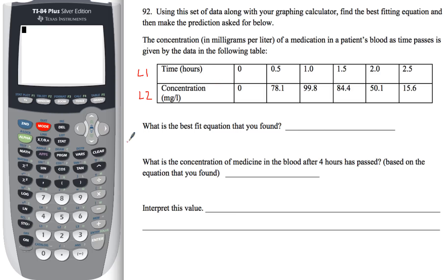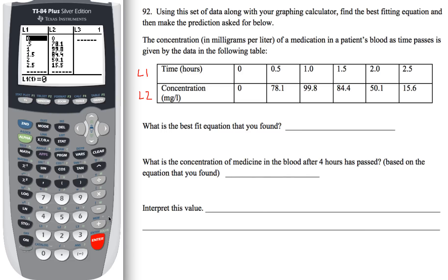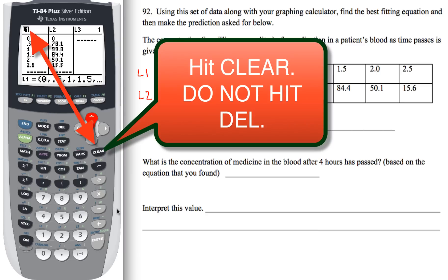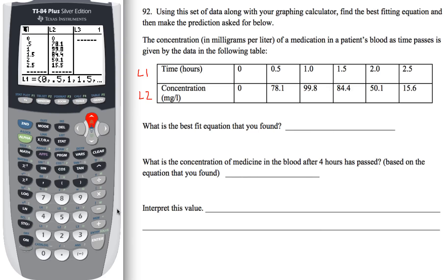To get to those lists, what we're going to do is hit our stat button, and then we're going to choose number one, edit. I've already put that information in there, but if you have anything typed in there, what you need to do is go up to the top of the row, and you're going to need to hit the clear button. Make sure you hit the clear button to remove any data that might be in there. Do not hit the delete button, because then that will just get rid of L1 altogether. Go ahead, take your time, input the data, and then come back after you've got all of that input. Your calculator and my calculator should look identical when you're done with that piece.